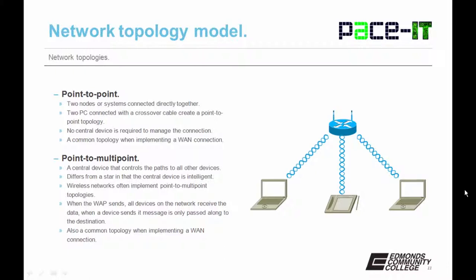We also need to discuss point-to-multipoint. In a point-to-multipoint topology, a central device controls the paths to all other devices. This differs from a star in that the central device is intelligent. Wireless networks often implement point-to-multipoint topologies — when the wireless access point sends, all devices on the network receive the data, but when a device sends, its message is only passed along to the destination. It's also a common topology when implementing a WAN across a packet-switched network.